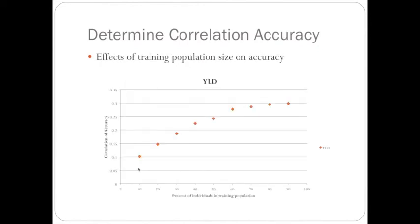So I just wanted to show here that the number of individuals put into the training set has a big influence on accuracy. So if you see here, with 10 percent of the individuals in the training population, the correlation accuracy is pretty low.